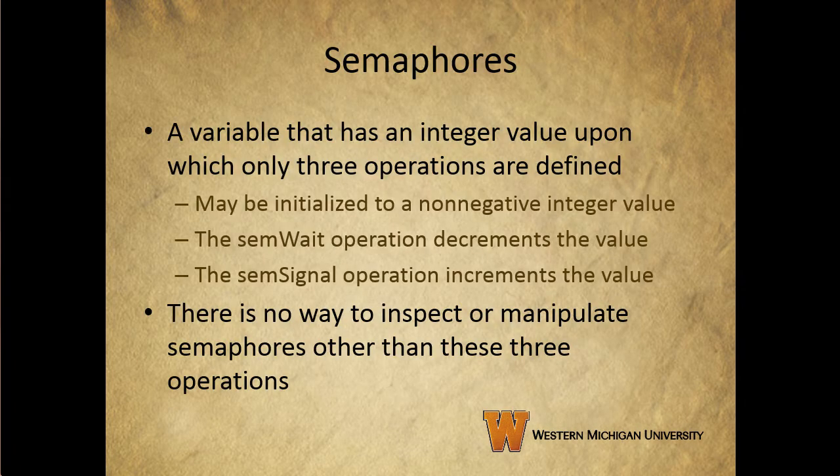The fundamental principle of semaphores is this: two or more processes can cooperate by means of simple signals so that a process can be forced to stop at a specified place until it receives a specified signal. Any complex coordination requirement can be satisfied by the appropriate structure of signals. For signaling, special variables called semaphores are used. To transmit a signal via semaphore S, a process executes the primitive semSignal(S).